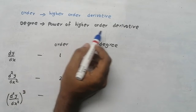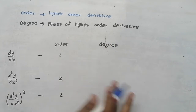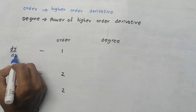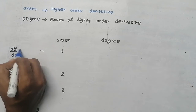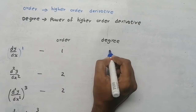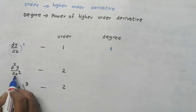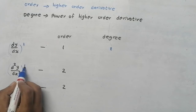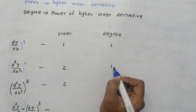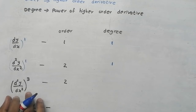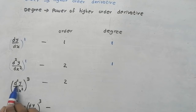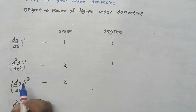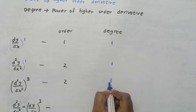So degree means the power of the highest order derivative. In this case, it is a first order derivative and the power of that is 1, so degree is going to be 1. In this case, it is a second order derivative and the power is 1, so degree is also 1. Now see this question — the order is 2, it is a second order derivative, but the power is 3, so degree is going to be 3.